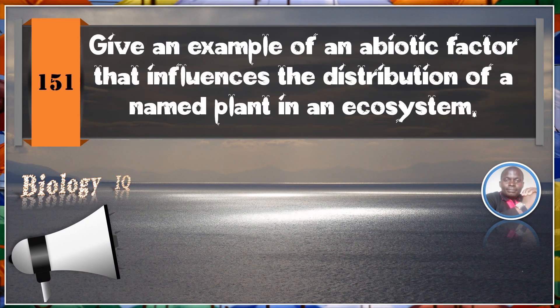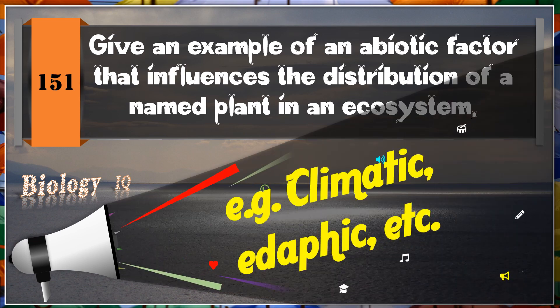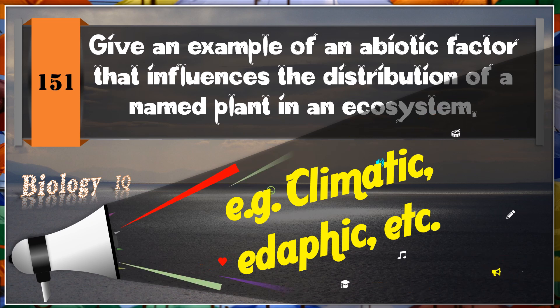Give an example of an abiotic factor that influences the distribution of a named plant in an ecosystem. For example, climatic, edaphic, and very many others.